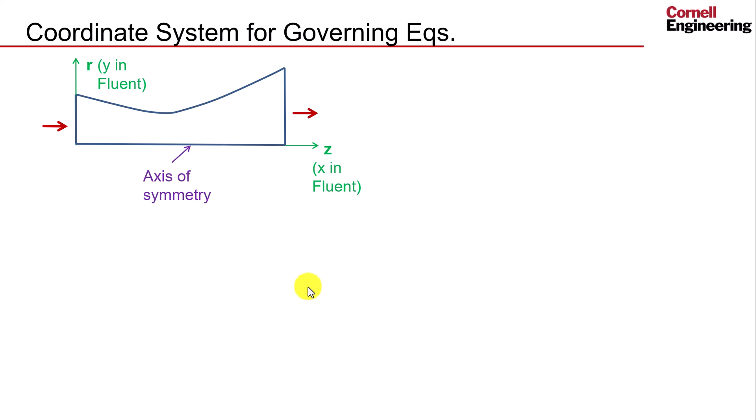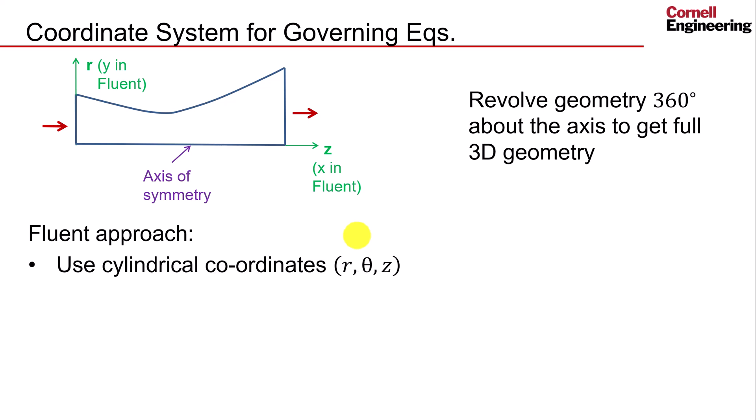As mentioned, we will model the nozzle using a 2D axisymmetric geometry. This means we will only model the 2D shape shown here, and a full 3D model can be created by revolving this shape around the axis of symmetry. In Fluent, this justifies the use of a cylindrical coordinate system, with the axial direction being labeled z and the radial direction being labeled r. Note that the geometry visualizations in ANSYS will make this change under the hood, but it will not be directly visible. This means that we need to mentally replace the x-axis in Fluent with the axial z-axis, and the y-axis with the radial r-axis.